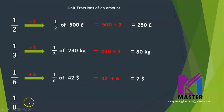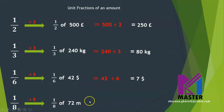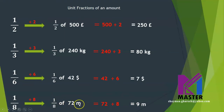Now one eighth. One eighth means division by eight. For example, one eighth of 72 meters means divide the 72 meters by eight. 72 divided by eight equals nine meters, which means one eighth of 72 meters equals nine meters.